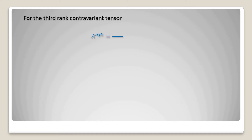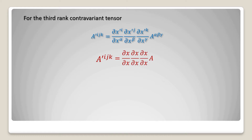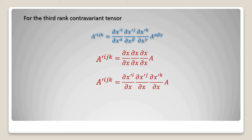For the third rank contravariant tensor, a prime upper suffix ijk equal to del x prime i divided by del x alpha into del x prime j divided by del x beta into del x prime k divided by del x gamma into a upper suffix alpha beta gamma. First write a prime ijk equal to del x by del x into del x by del x into del x by del x into a — three times because this is a contravariant tensor of rank 3. In the next step write a prime ijk equal to del x prime i divided by del x into del x prime j divided by del x into del x prime k divided by del x into a.